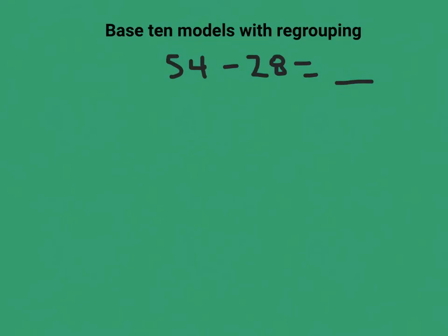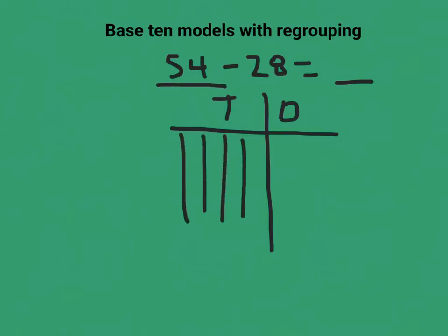In this example there will be regrouping. So again I'm using the base 10 model. I'll make a t-chart showing my tens and my ones. I'll go ahead and draw out 54: 10, 20, 30, 40, 50, and 1, 2, 3, 4.